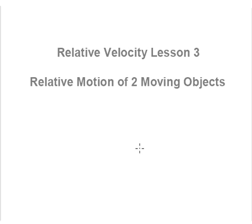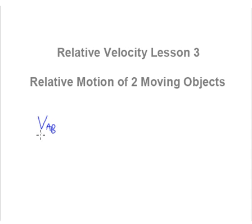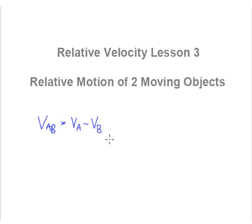Relative velocity, lesson 3. Relative motion of two moving objects — this is where we learn how two moving objects move relative to each other, whether they will simply be crossing each other's path or will they be colliding. Before we move on to the first example, the best way to learn is through an example as I always say. First, we need to recap on what we have learned about relative velocity so far.